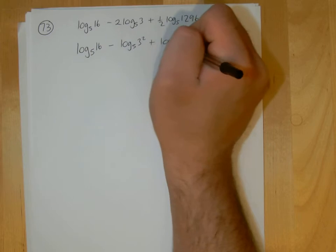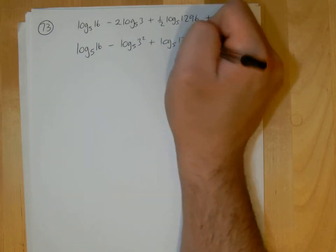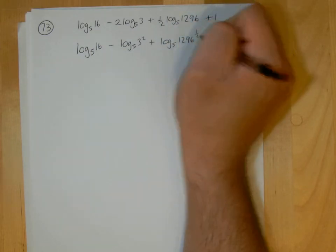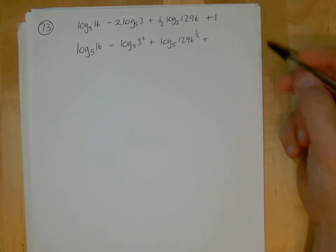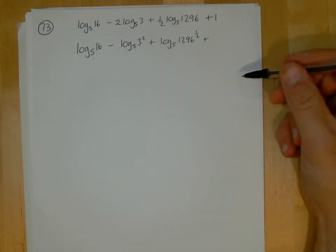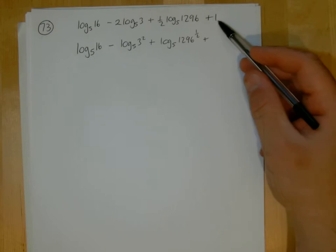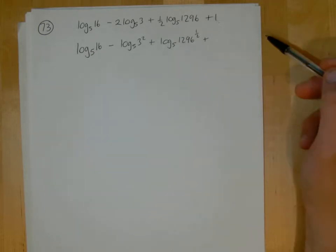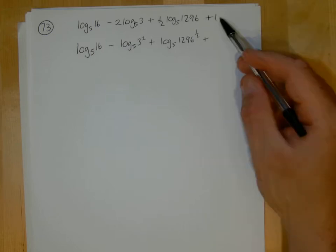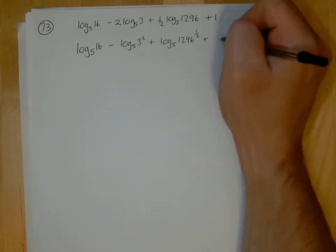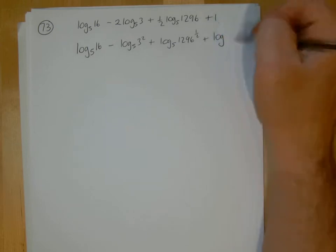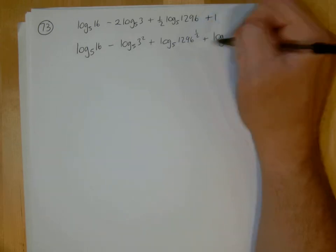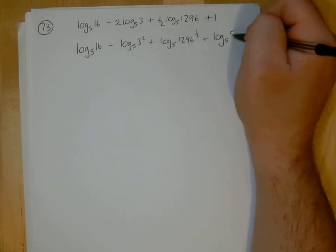So it becomes log base 5 of 1296 to the power one half. Now as I said, one is in fact a special logarithm. Because if we get the logarithm equal to one, then the power is one, which simply means we need to have a log where the power is one.